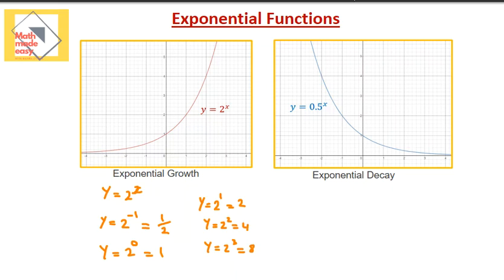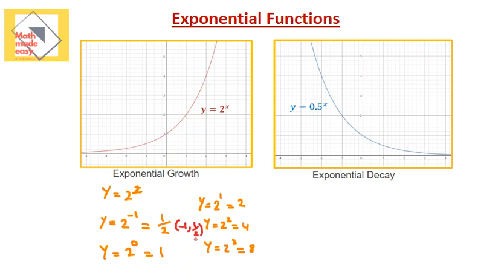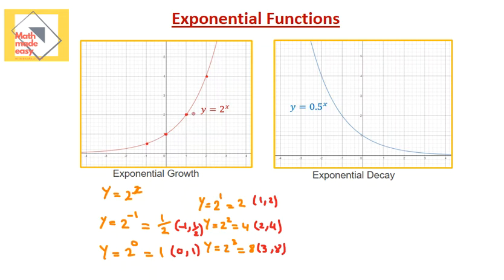Now, why are we doing this? I want you to see what exponential functions show. When I substituted, what points did I get? When x was equal to negative 1, y was equal to half. When x was equal to 0, y was equal to 1. When x was equal to 1, y was equal to 2. When x was 2, y was 4. And when x was 3, y was 8. If you try to graph these points, you will find the first point at x equal negative 1, y equal to half; then at 0, it's equal to 1; at 1, it was equal to 2; at 2, it was equal to 4; and at 3, it was equal to 8. So this is what gives you the graph.